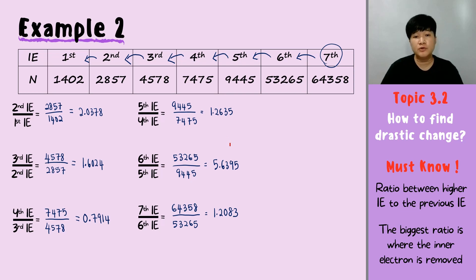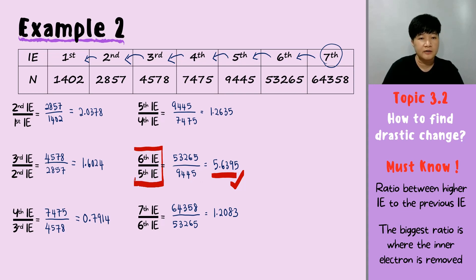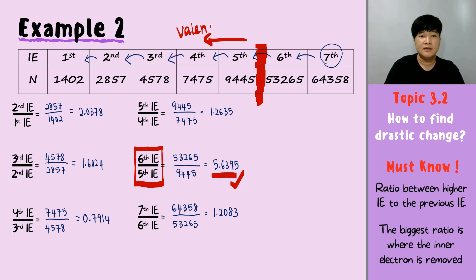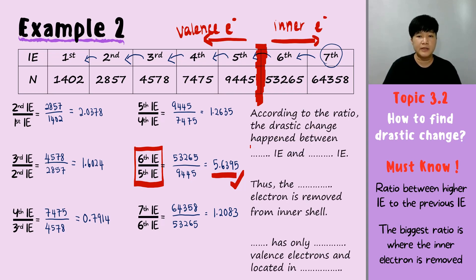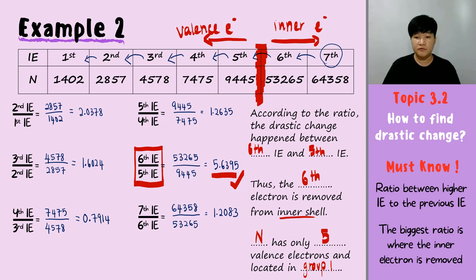After calculating all the ratios — 2-point-something, 1.6, 0.7, 1.2, 5.6 — the largest value is 5.6, so that is the champion. The drastic change happened between the fifth and the sixth IE. Everything before the drastic change is your valence electron, and from the sixth onwards is your inner electron. According to the ratio, the drastic change happened between the sixth IE and the fifth IE. Thus the sixth electron is removed from the inner shell. This element — nitrogen — has only five valence electrons and is located in group 5.